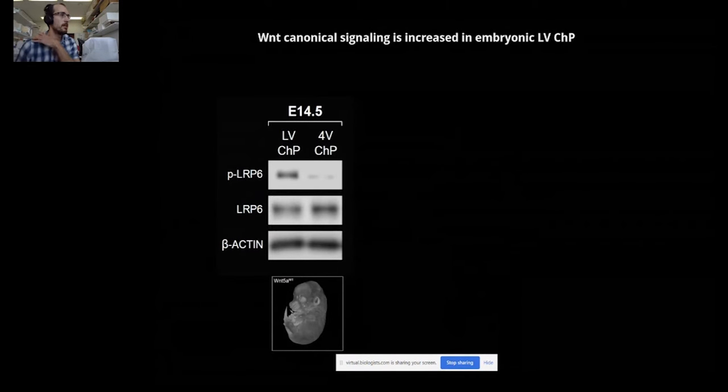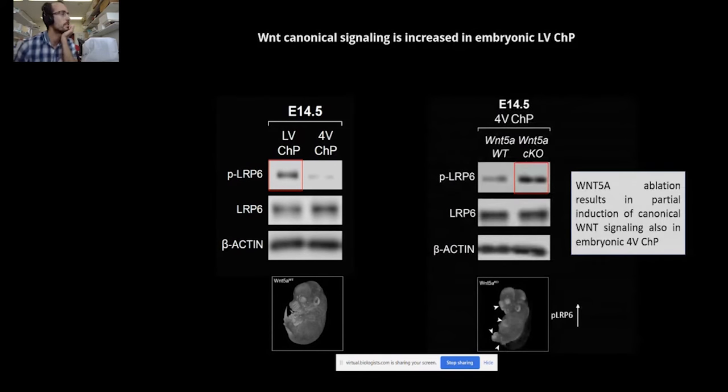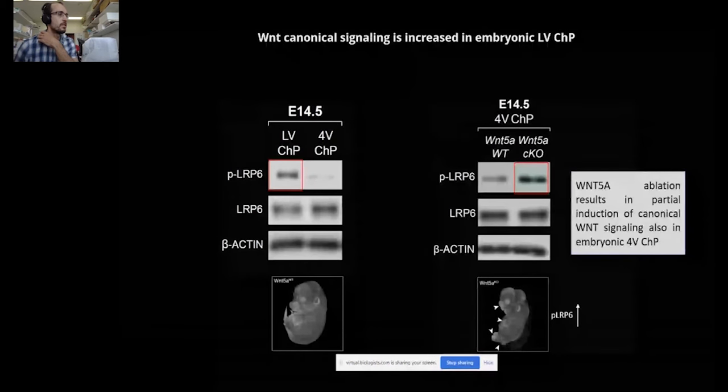To our surprise, however, biochemical analysis of the plexus tissues also revealed stronger activation of canonical signaling specific for the lateral ventricle choroid plexus, demonstrated by the phosphorylation of the LRP6 protein. Furthermore, we also noticed that upon WNT5A ablation we see partial phosphorylation of this receptor also in the fourth ventricle choroid plexus. This result suggests that there might exist a dynamic interplay of WNT5A signaling in the developing lateral and fourth ventricle choroid plexuses.